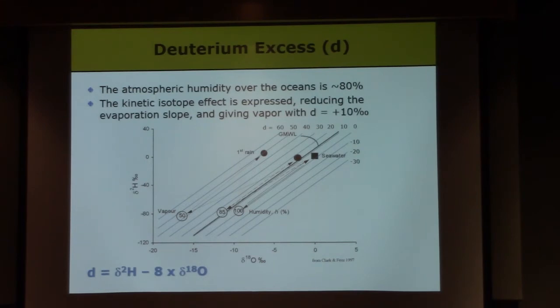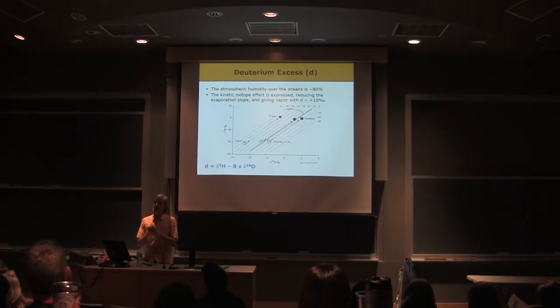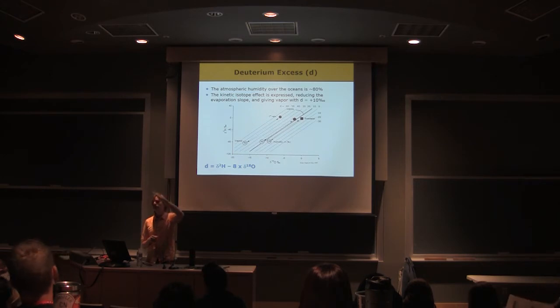So 80-85% is the relative humidity of the free atmosphere of the oceans. That means there is some expression of the kinetic isotope effect. And what's the implication? That means that the fractionation, the net fractionation, the line that we get for that evaporation process, has a slope lower than 8.